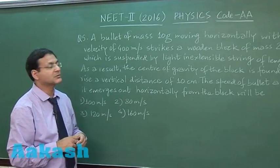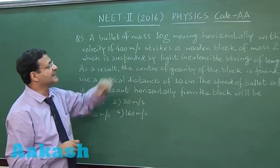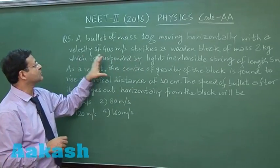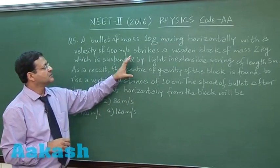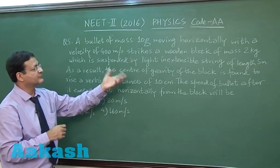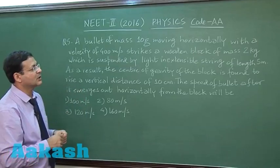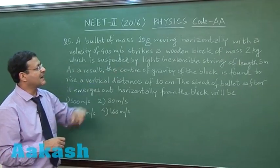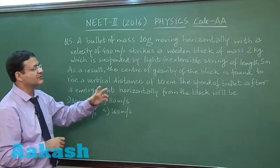It is a kind of collision-based question. A bullet of mass 10 grams moving horizontally with a velocity of 400 meters per second strikes a wooden block of mass 2 kg. You can see the bullet mass is in grams and that of the wooden block is in kilograms, so be careful about that.